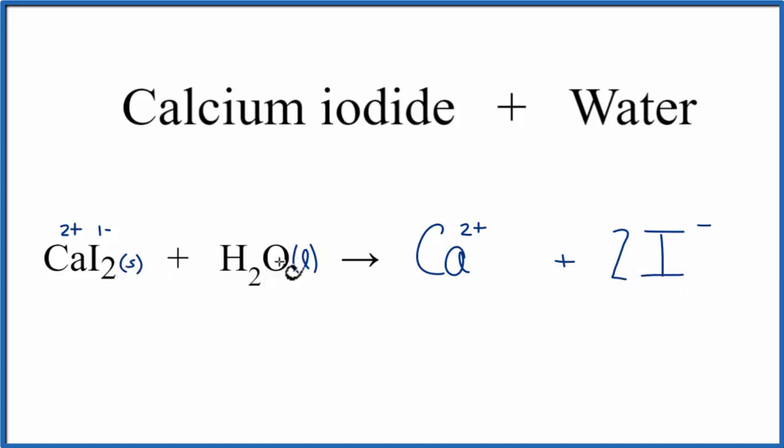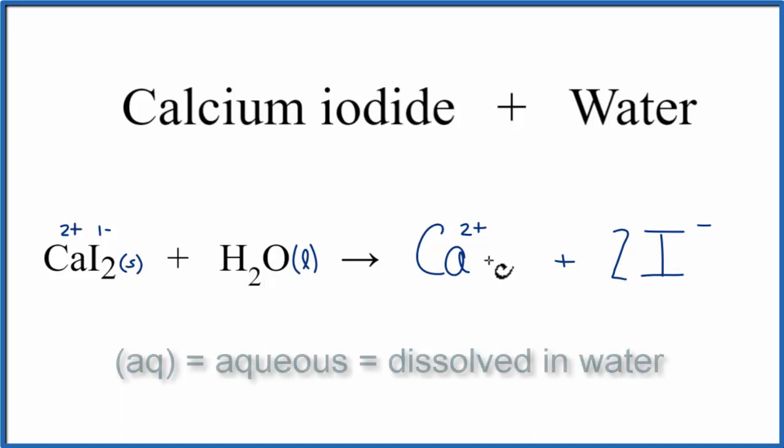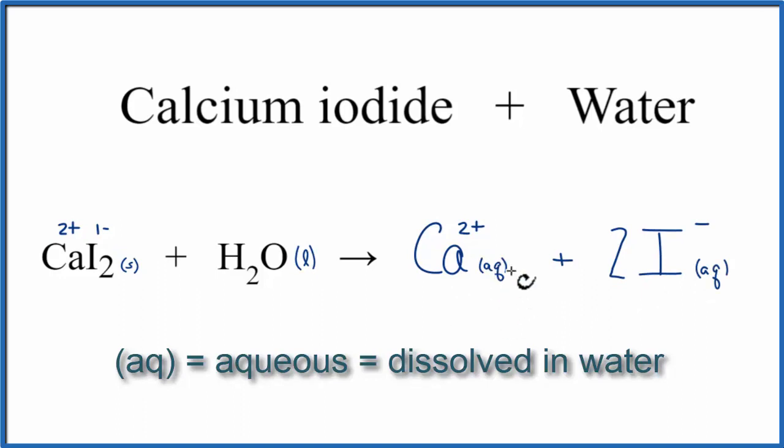Since we dissolve the solid in a liquid, we can say that it's aqueous. We dissolve it in water, and aqueous means dissolved in water. So we write aqueous, and this shows that these ions are dissolved in the water.